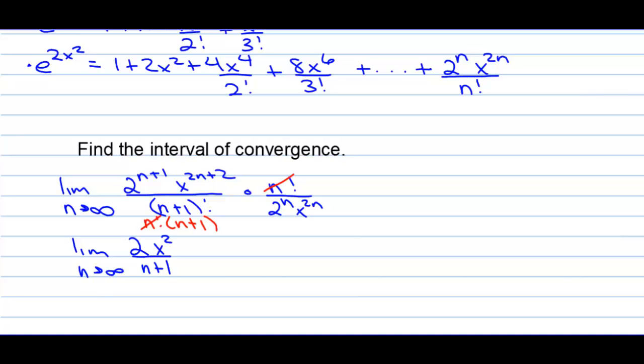The n factorials will cancel out, and now we're left with n plus 1 in the denominator, n plus 1. But if you take the limit as n approaches infinity for the n part, of course, this becomes 0 times x squared, which is, we want to know when is that less than 1. Well, it's always less than 1. So, negative infinity to infinity on that piece.